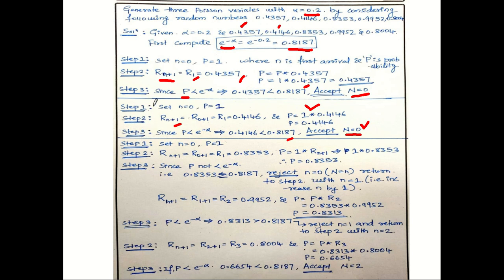Next, repeat the steps for the third number. Set n equal to 0, p equal to 1. The third random number gives p equal to 0.8353. Since p is not less than e raised to minus alpha — that is, p is greater than 0.8187 — this number is rejected. We set n equal to 1 and return to step 1.